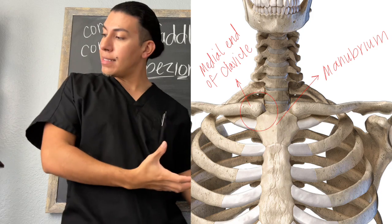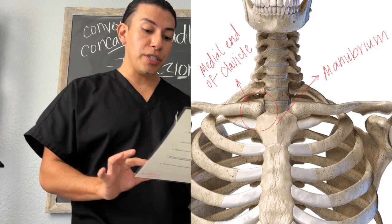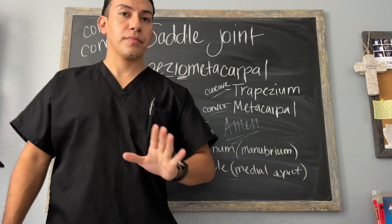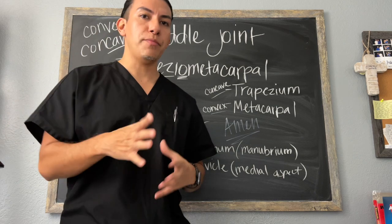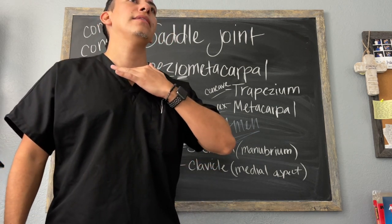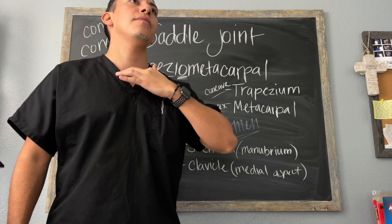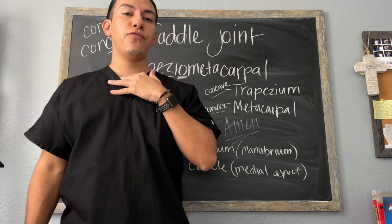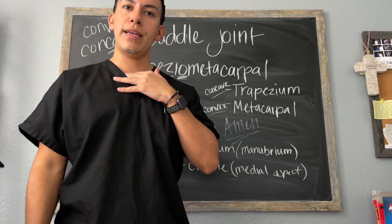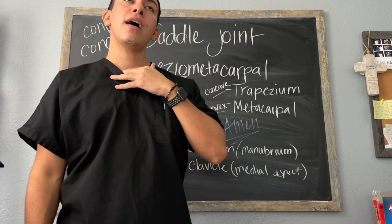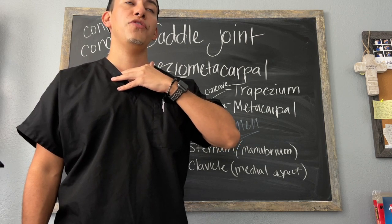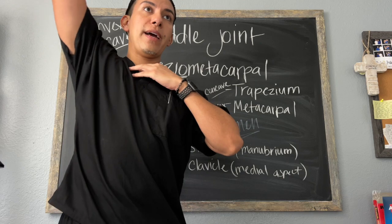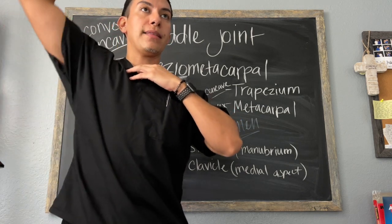This joint allows for a significant amount of movement, just like the thumb. To feel it, palpate the clavicle, find the sternum, and put your finger right where they articulate. The sternoclavicular joint allows for elevation, depression — you can already feel those movements — as well as protraction, retraction, and circumduction. If you lift your hand above your head, you can feel that movement taking place at the sternoclavicular joint.